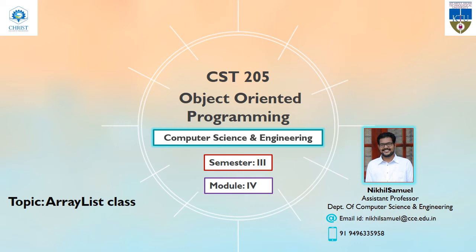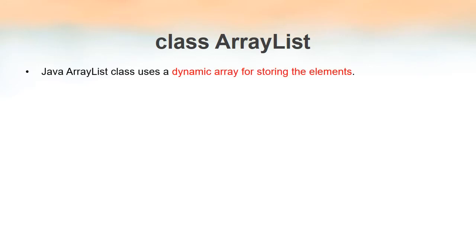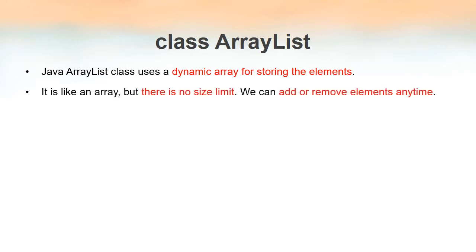Welcome to the video series on object-oriented programming. In this video lecture we'll be discussing the ArrayList class. The ArrayList class of Java is used for creating or storing elements dynamically. Dynamic means there is no limit in size — it is similar to an array but its size is not limited; we can add or remove elements whenever we need.